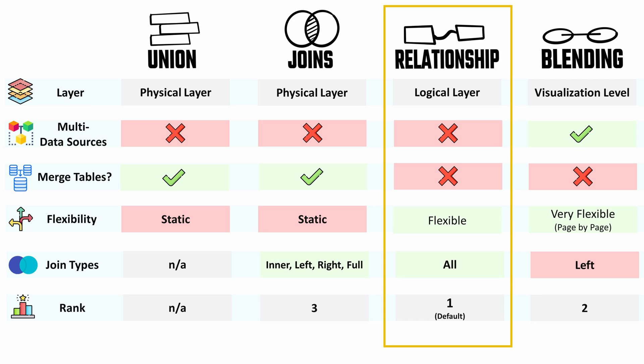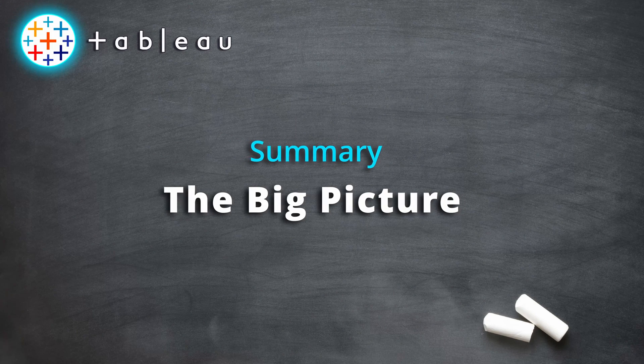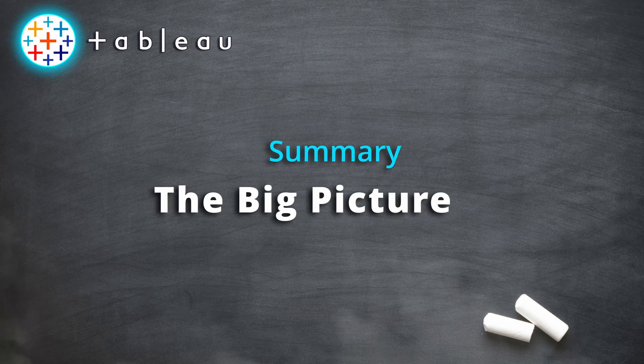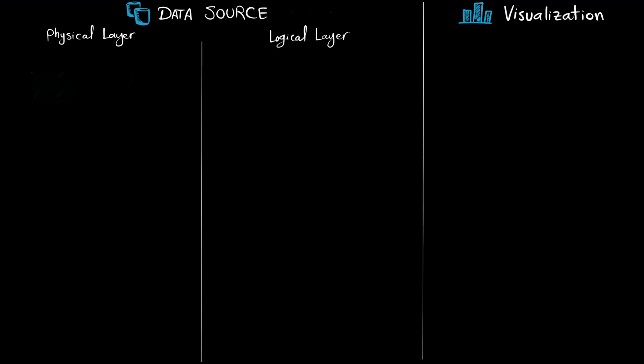Third comes joins. I wouldn't rank unions because it's a completely different method from joining, relationships, and data blending. So always try to go with relationships, and now let's look at the big picture of how all four methods work.